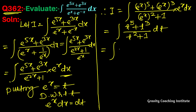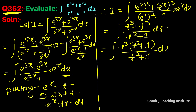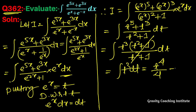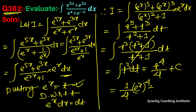In the numerator, t^3 is common. After factoring and simplifying, the integration of t^3 gives t^4/4. So the answer is (1/4) * e^(4x) + C.